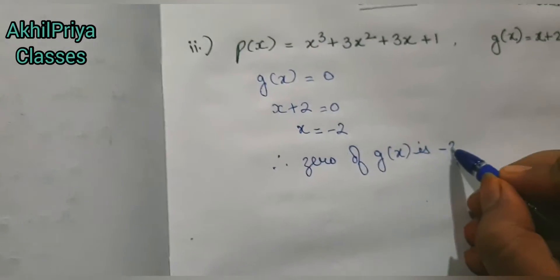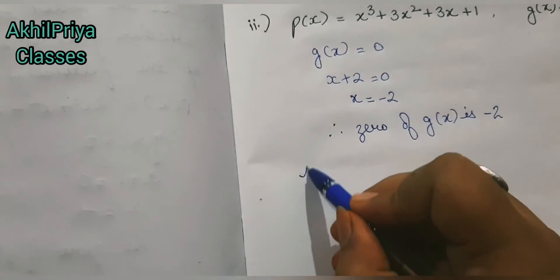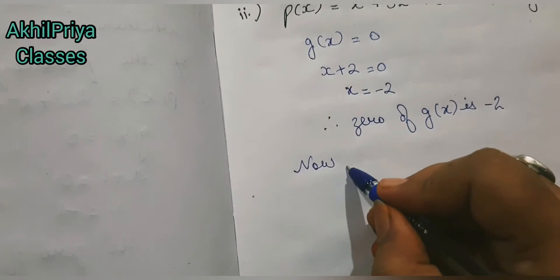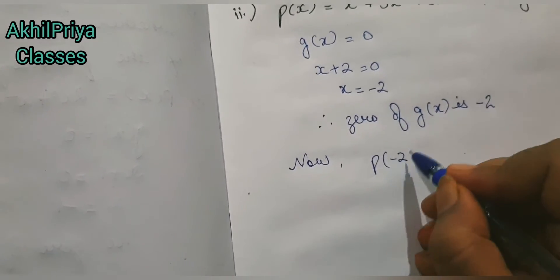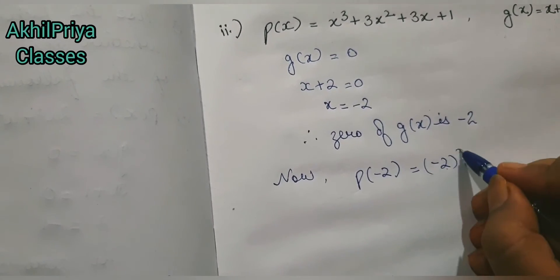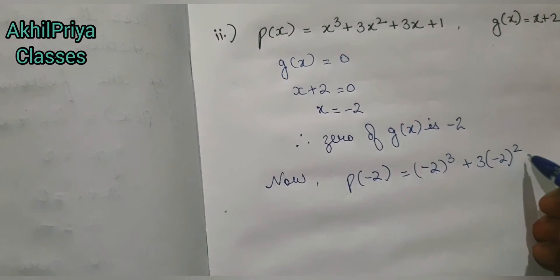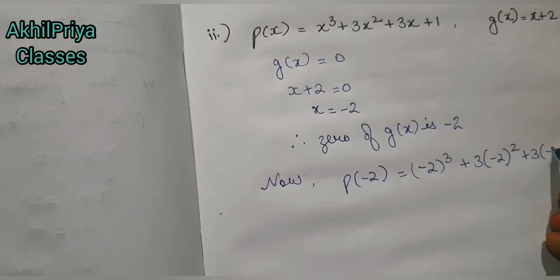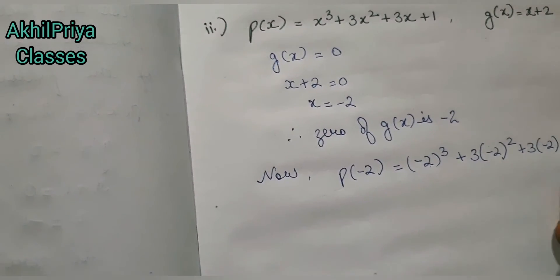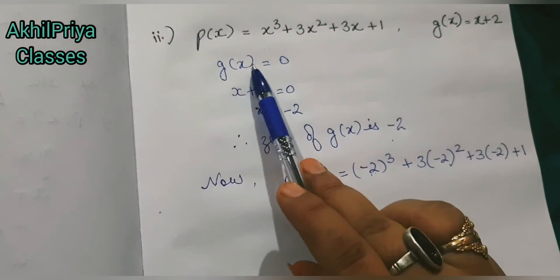Now we will put this value in our p(x). So p(-2) = (-2)³ + 3(-2)² + 3(-2) + 1. We have substituted -2 in place of x.